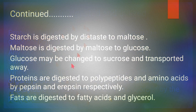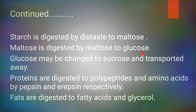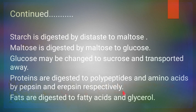For example, starch stored in potato tubers is converted into maltose by the enzyme diastase, and then maltose is converted into glucose by the enzyme maltase. Glucose may then be changed to sucrose and transported to all parts of the plant via phloem. Proteins are digested to polypeptides and amino acids by pepsin and repsin respectively.